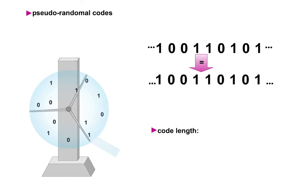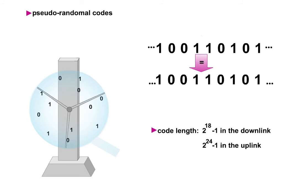The length of the codes is 2 to the power of 18 minus 1 in the downlink and 2 to the power of 24 minus 1 in the uplink. Their length also corresponds to the number of different codes.